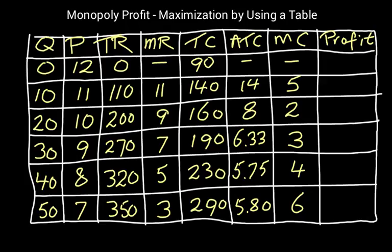So here we have a table with cost data, revenue data. And there's two ways to figure out what quantity, the quantities in the first column, what quantity this monopolist should produce in order to maximize profits.